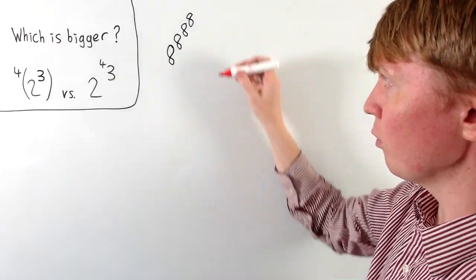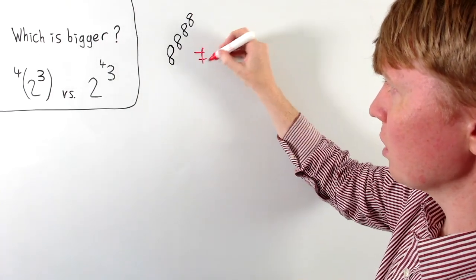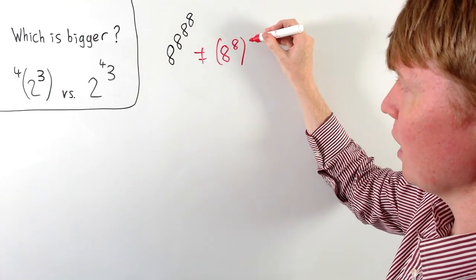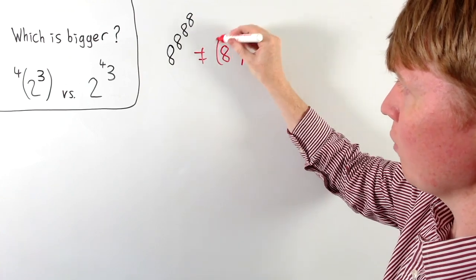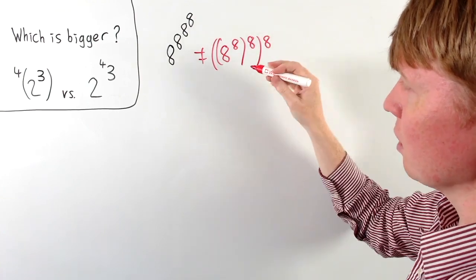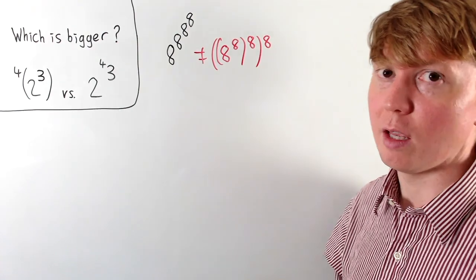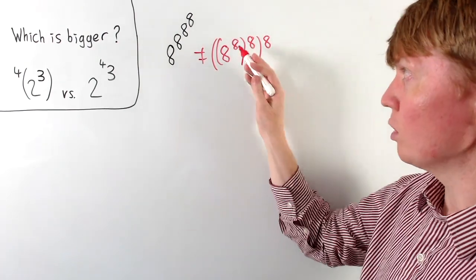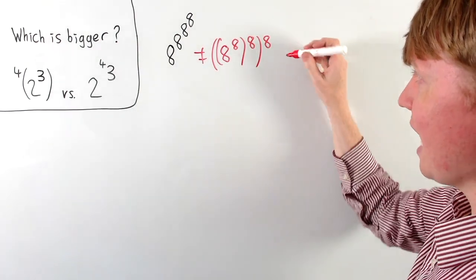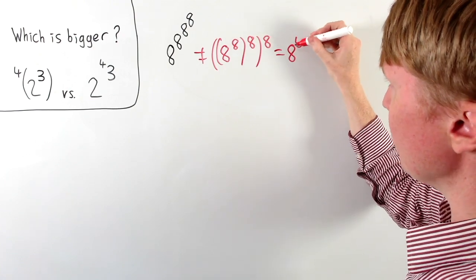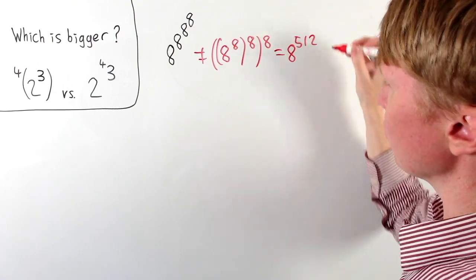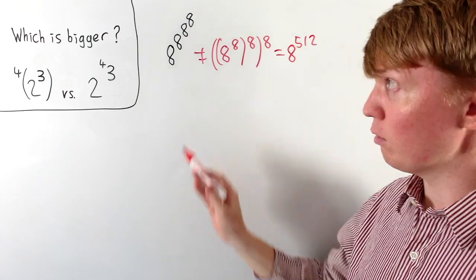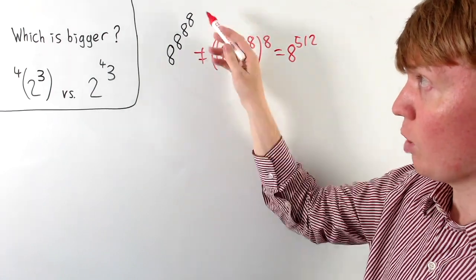This is different from doing eight to the power of eight, then raising that answer to the power of eight, and finally raising that to the power of eight again. Because in that case we could just use our laws of indices to multiply those exponents, and we'd get eight to the power of 512 — a very big number, but nowhere near as big as the tetration expression.